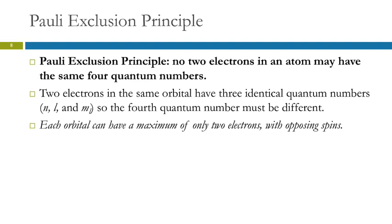The Pauli Exclusion Principle says no two electrons in an atom may have the same four quantum numbers. You could have two electrons in the same orbital sharing three identical quantum numbers, but then the spins have to be different. So you can have two electrons in an orbital, but they must have opposite spins. Each electron has its own unique set of four quantum numbers — it's like a Social Security number that belongs to one person only.